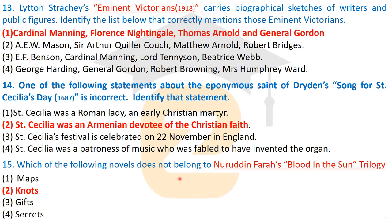Question fifteen: which of the following novels does not belong to Nuruddin Farah's 'Blood in the Sun' trilogy? A trilogy contains three works. The correct answer identifies the novel that is not included in 'Blood in the Sun.' Maps, Gifts, and Secrets are the three books of the 'Blood in the Sun' trilogy by Nuruddin Farah.